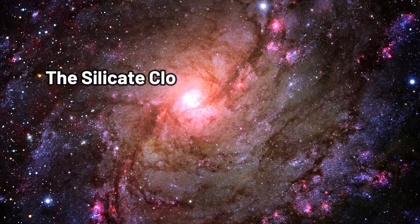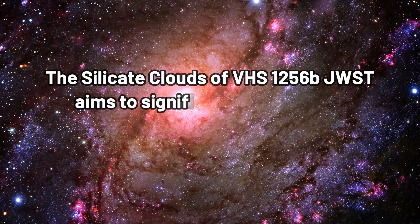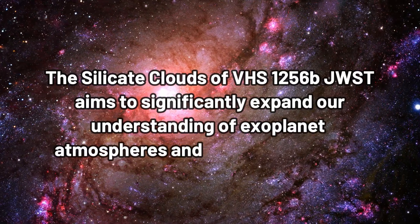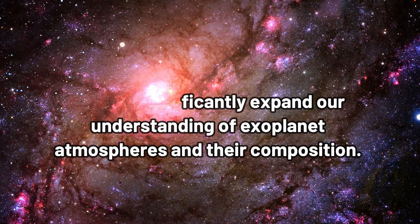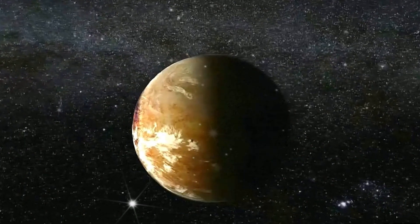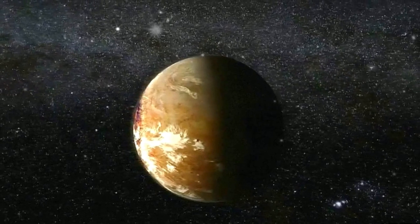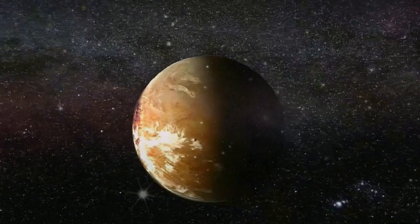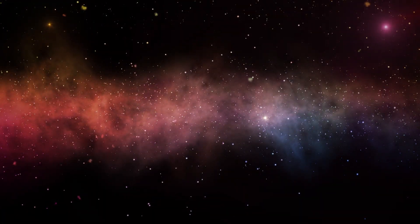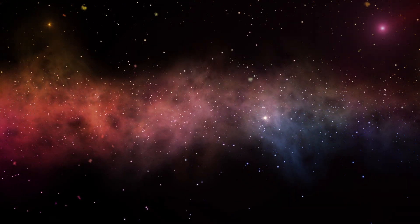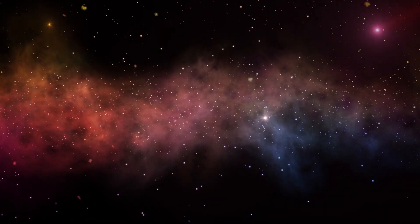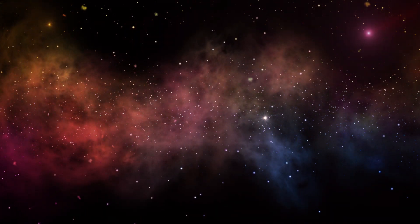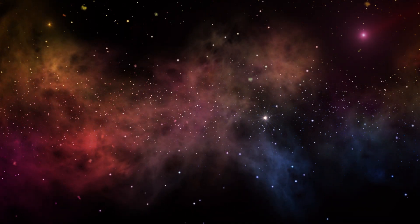The silicate clouds of VHS 1256B. JWST aims to significantly expand our understanding of exoplanet atmospheres and their composition. The exoplanet VHS 1256B, located approximately 40 light-years away in a double star system, has a unique atmospheric makeup. Despite its young age of 150 million years, the planet exhibits a disequilibrium in its atmospheric composition containing water vapor, methane, carbon monoxide, carbon dioxide, and even silicon.